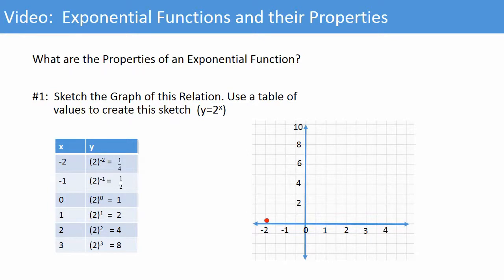So at negative 2 and 1 quarter we're going to put a dot. At negative 1 and 1 half a dot. At 0 and 1 a dot. At 1 and 2 a dot. At 2 and 4 a dot. And at 3 and 8 a dot. We're going to add the label y equals 2 to the x to the top of the graph.